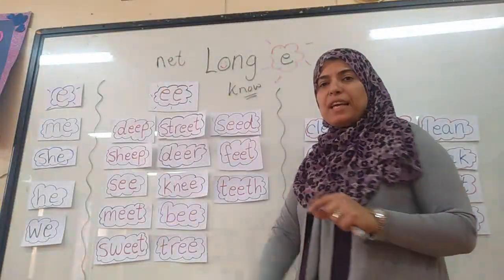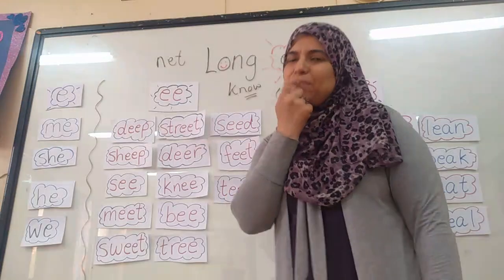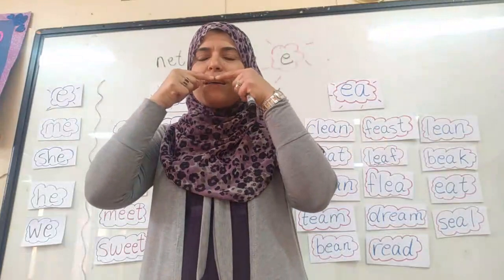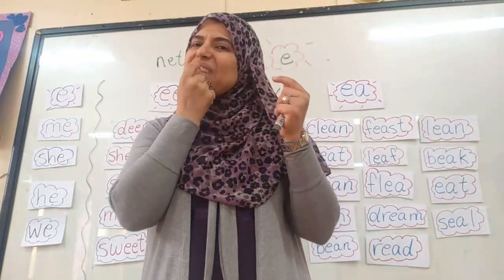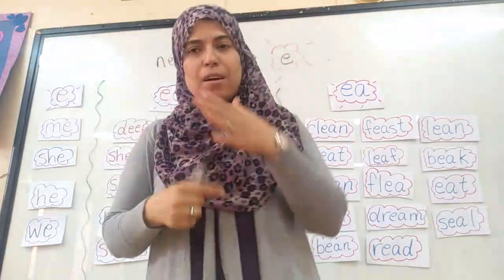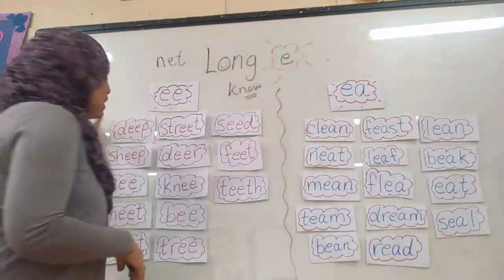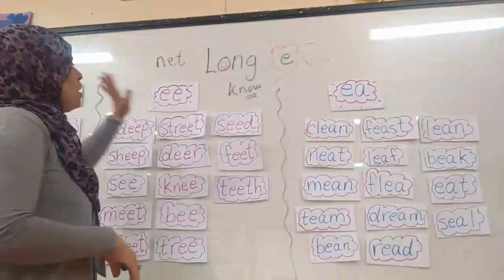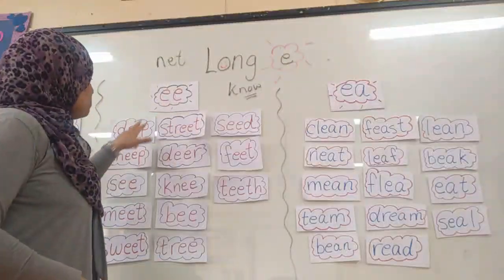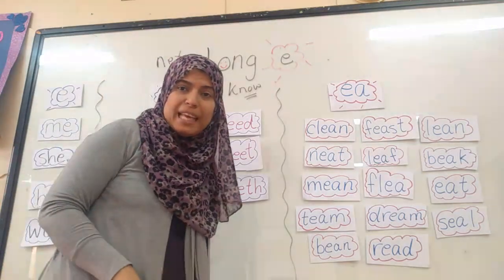F-E-A-T: feet — my feet. Then teeth — my teeth. All the teeth in my mouth. And this is my tooth — one tooth. These are my teeth. So I have: one E by itself — it's long E when it comes at the end of the word without a vowel. Double E — those two letters sound E. The last one is E and A together.